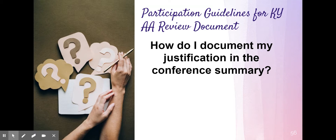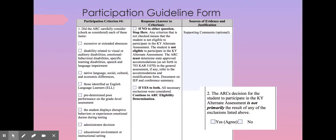When thinking about the conference summary notes, it's important to document justification that the student is receiving individual direct instruction, intensive accommodations, modifications, and the required assistive technology. You'll want to make sure that is documented in the IEP and that you're discussing what that looks like in the classroom in the conference summary. Also, remember to include parent involvement, parent comments, and parent feedback in that section.